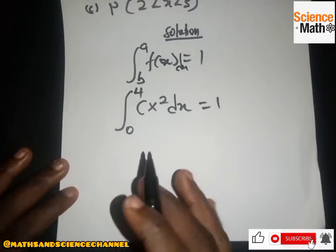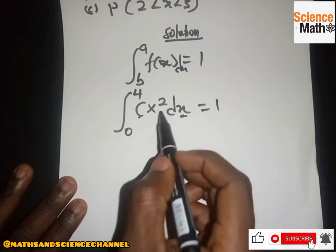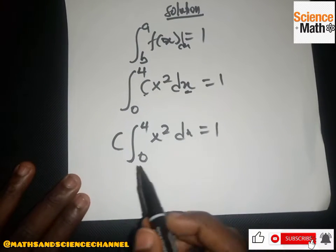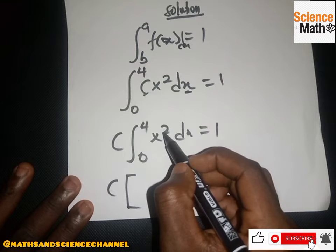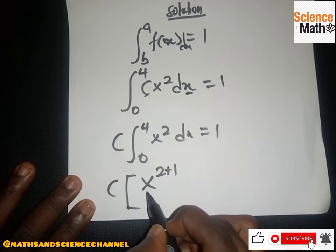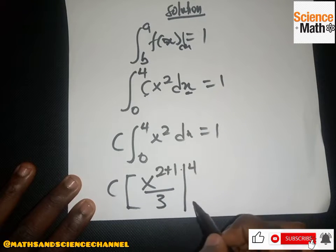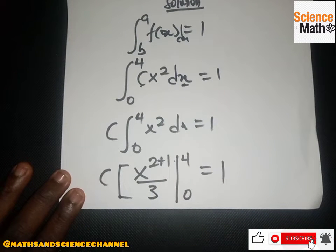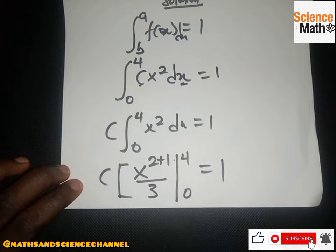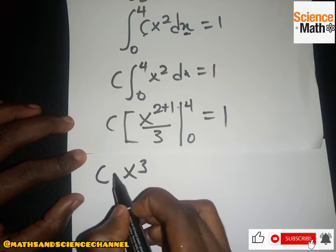We are integrating with respect to s, so c is treated as a constant and comes out of the integral. We then integrate s² by adding 1 to the exponent, giving s³, and then divide by the new exponent, which is 2 + 1 = 3. This gives us c times s³ over 3, evaluated from 0 to 4, equal to 1.